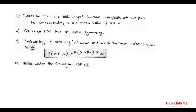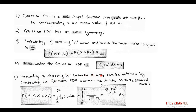The area under the Gaussian PDF is unity, so the integral of f(x) dx equals 1. The last point is that the probability of finding random variable X between x1 and x2 can be obtained by finding the area of the shaded portion. This is obtained by integrating the Gaussian PDF f(x) between limits x1 and x2 with respect to dx. So, the probability of observing x1 less than or equal to X less than or equal to x2 equals the integral from x1 to x2 of (1 upon root 2π sigma) times e to the power minus (x minus mu) squared upon 2 sigma squared, dx.